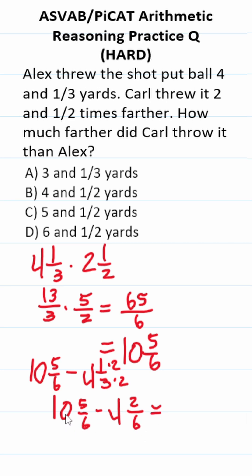Now we just do this simple subtraction here. 10 minus 4 is 6, 5 minus 2 is 3. Our denominator does not change. So this is going to be 6 1/2 yards farther.